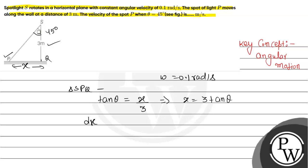We will differentiate this equation. It will be dx divided by dt equals 3 into the differentiation of tan theta, which is sec squared theta into d theta by dt. Now this value dx by dt will be the velocity.